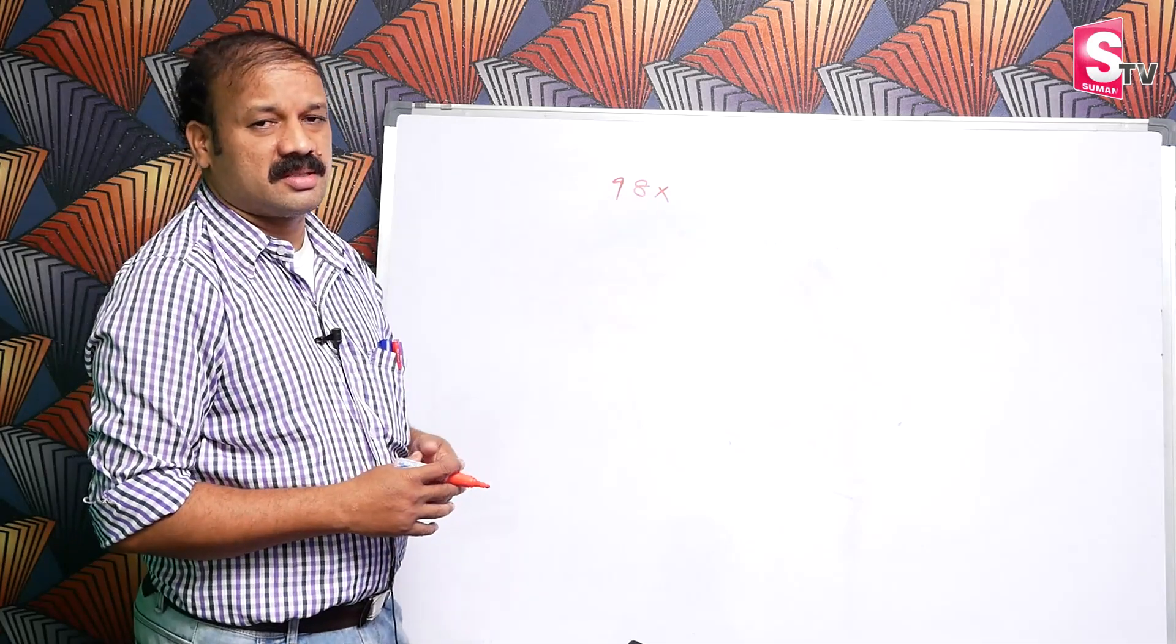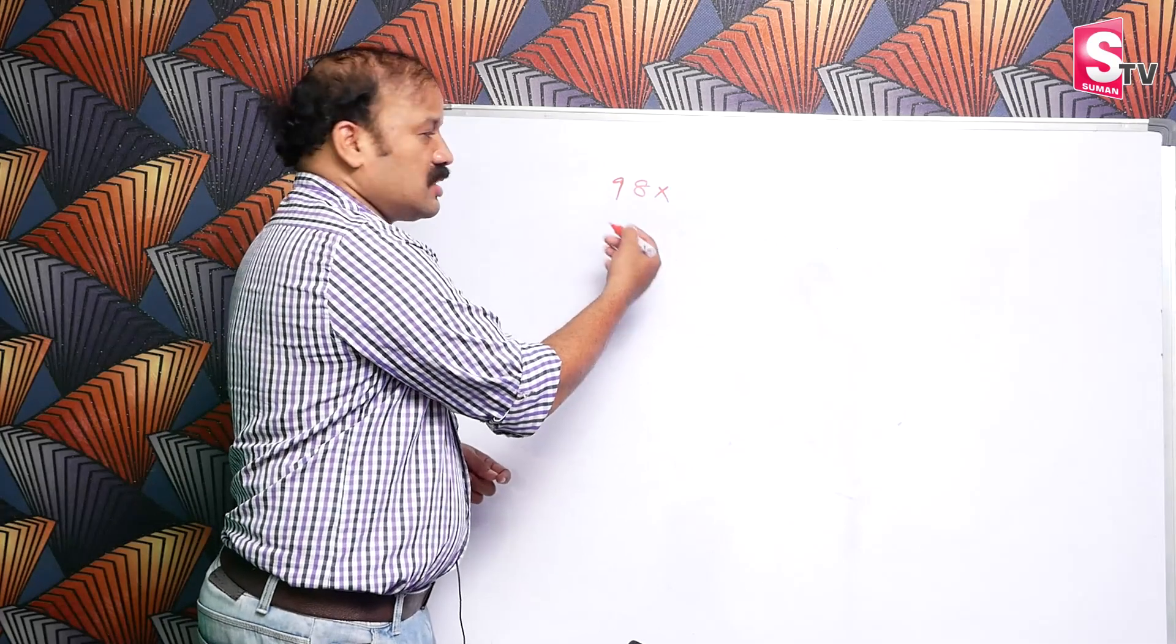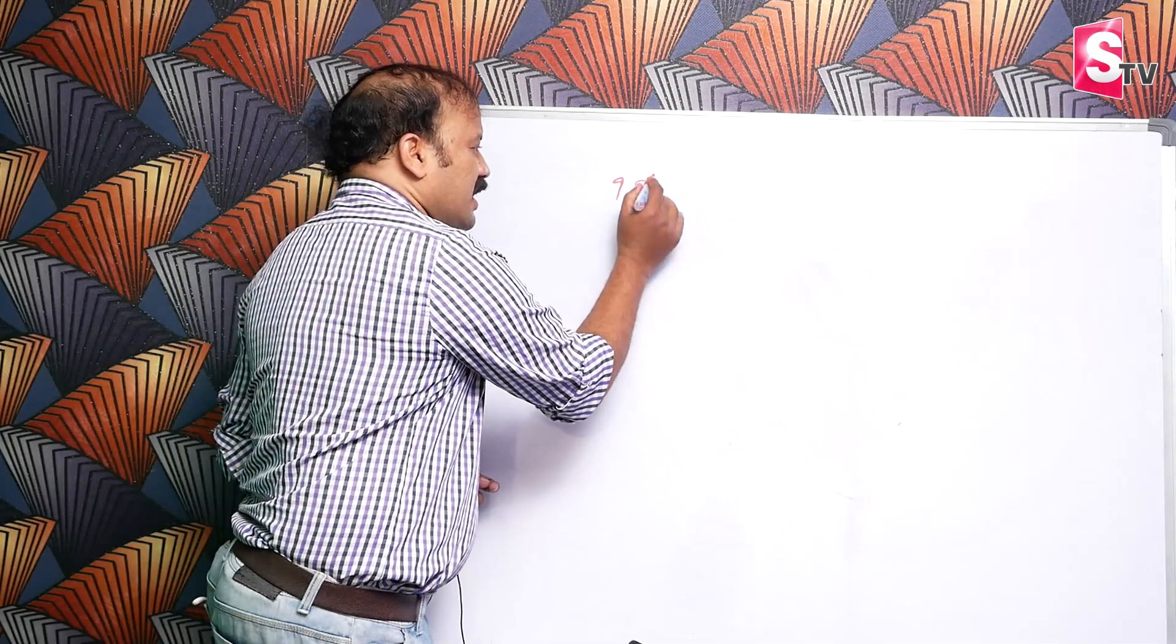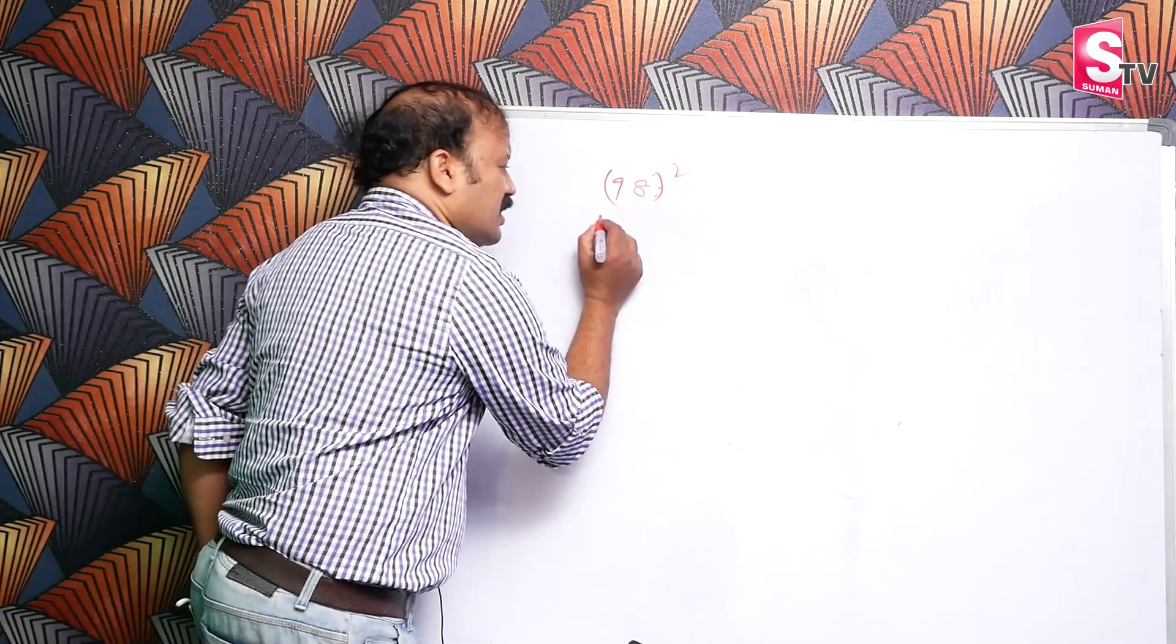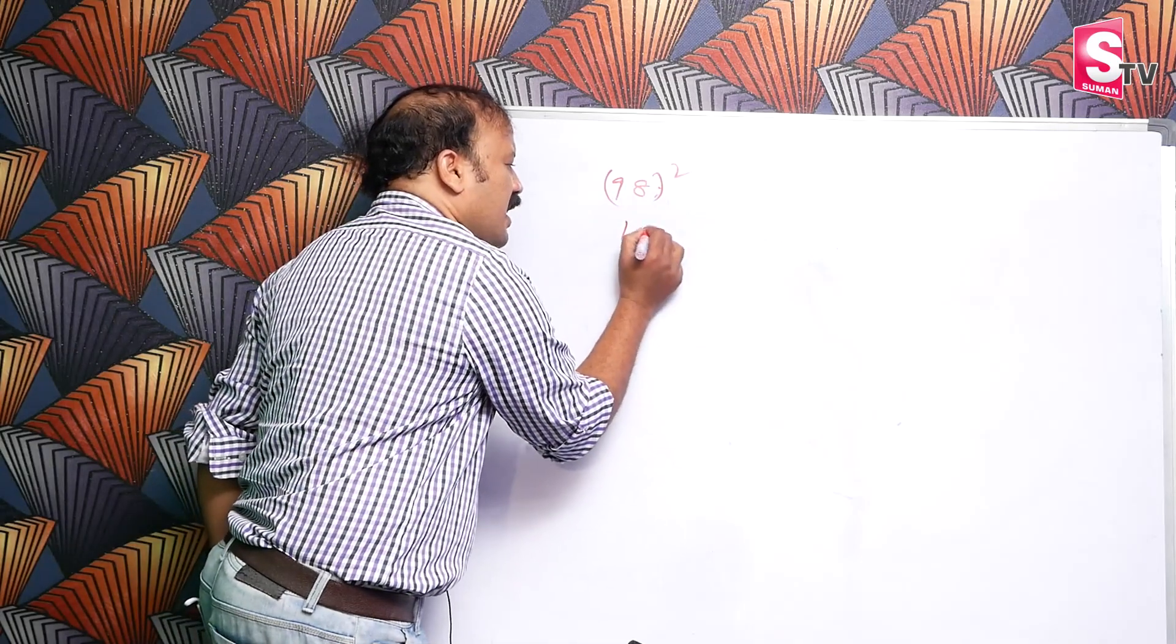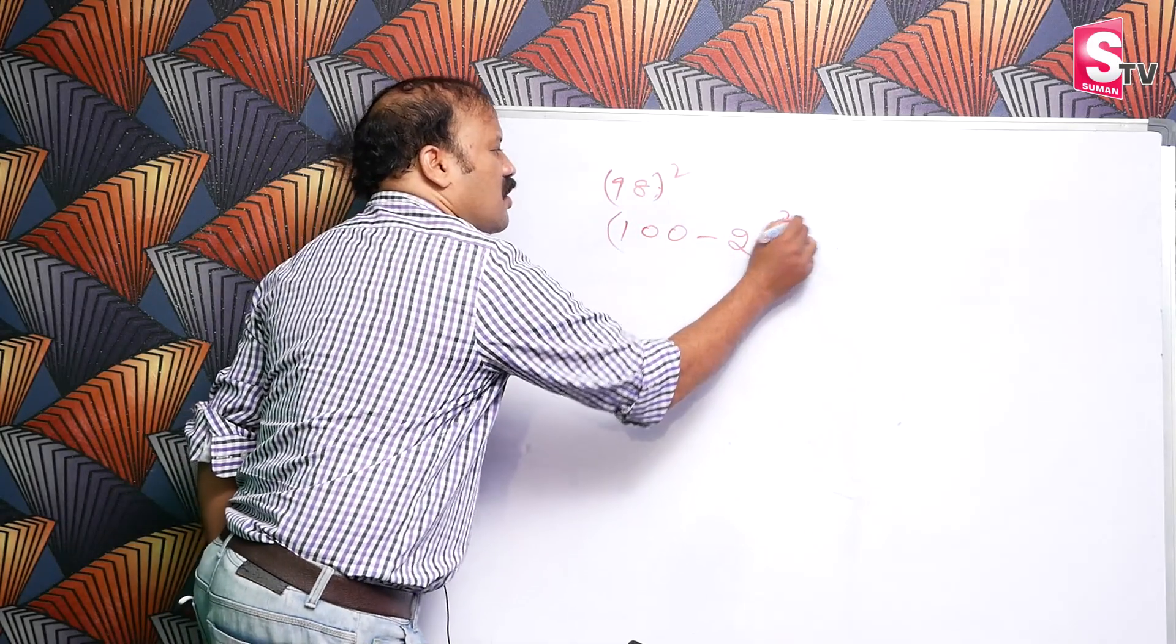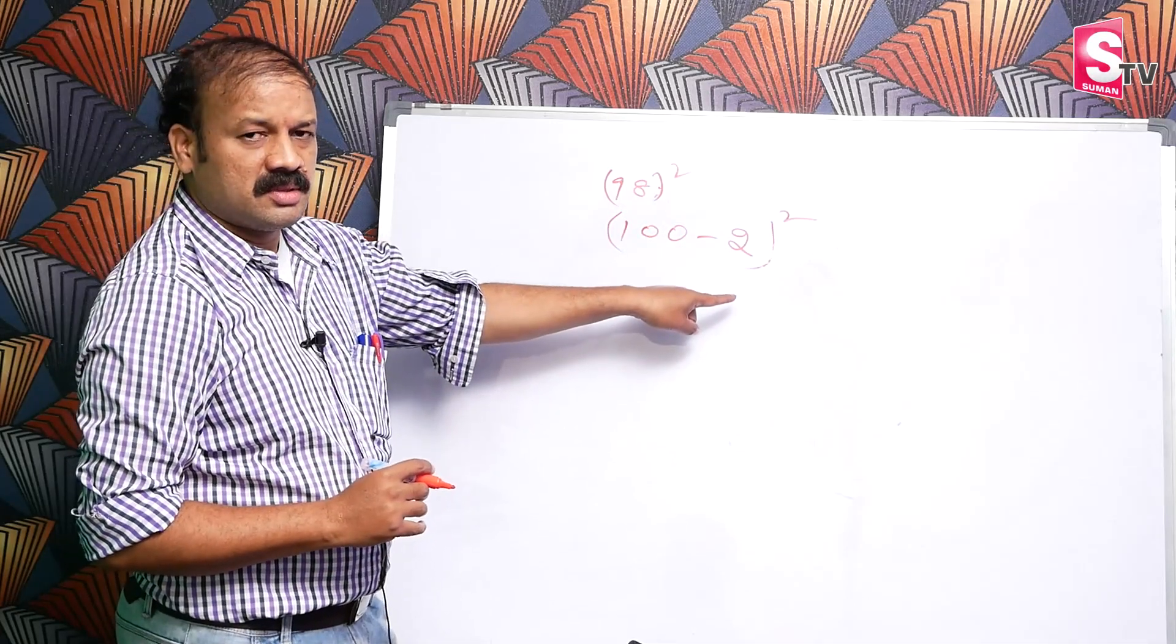For example, 98 into 98. 98 depends on formulas like a minus b whole square or a plus b whole square. 98 whole square—98 is very near to 100, so we can write it as 100 minus 2 whole square.